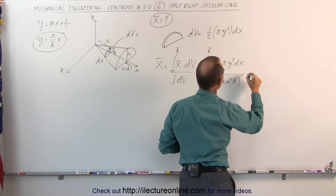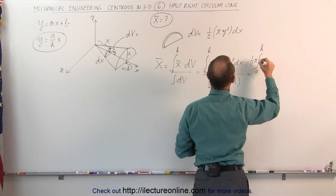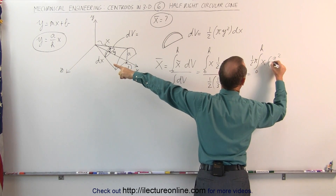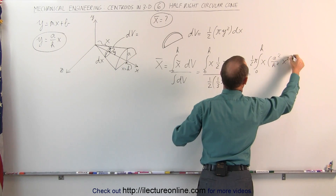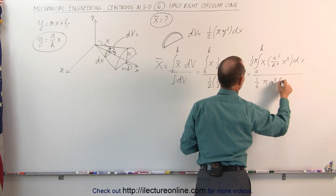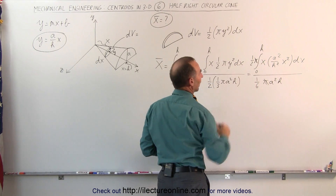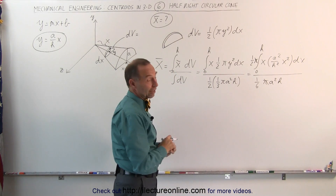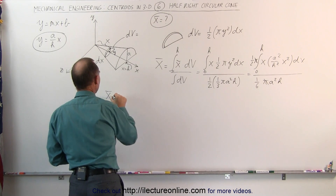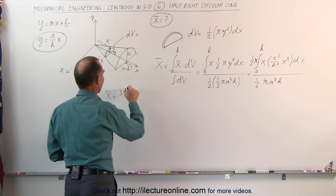Substituting that in, this becomes the integral from zero to h with one-half pi factored out, and y squared becomes a squared over h squared times x squared, giving x times (a²/h²)x² dx. In the denominator we have one-sixth pi a squared h. The pi cancels, and one-half divided by one-sixth equals three.